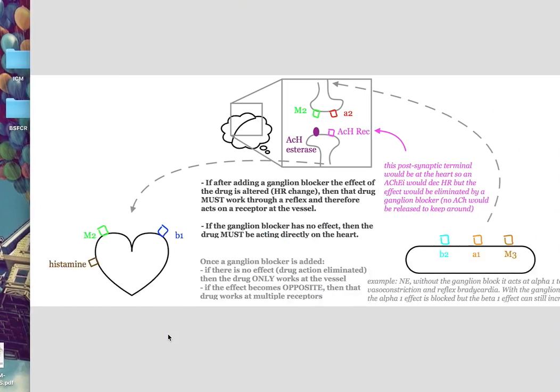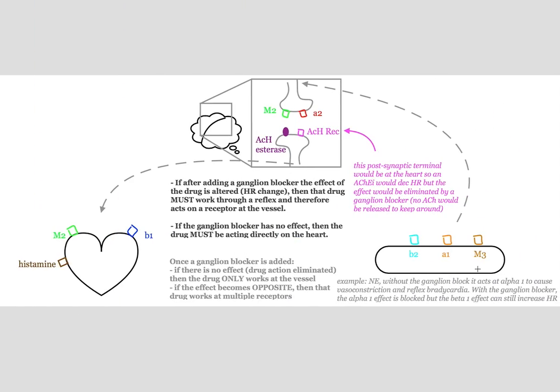I came up with this diagram that I think simplifies it. You either have receptors on your vessel wall, on the heart itself, or you have receptors that you can mess with in the CNS.